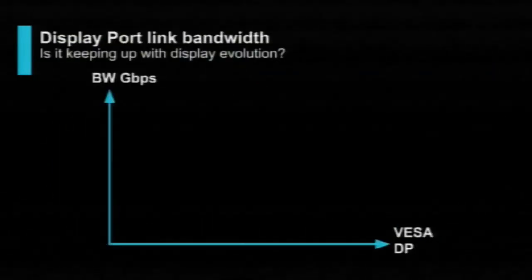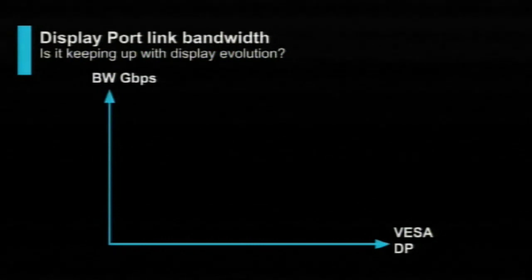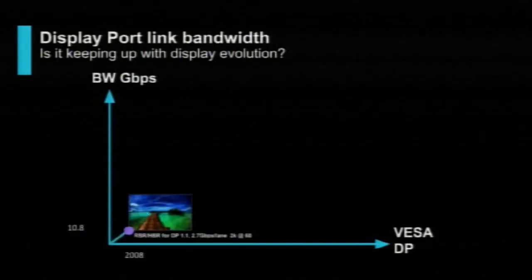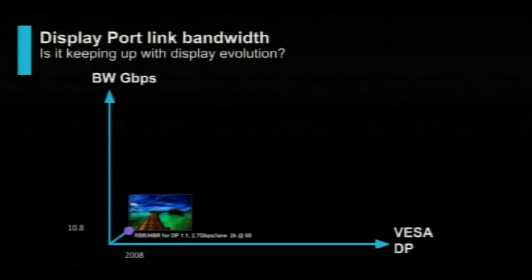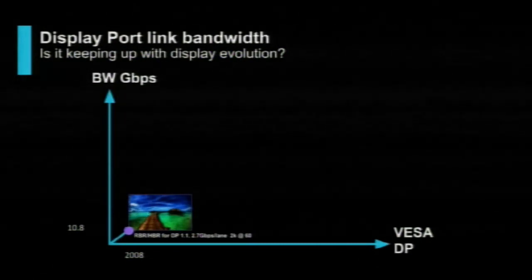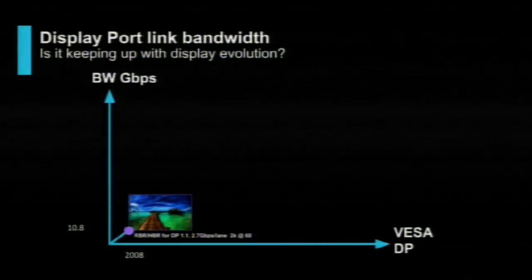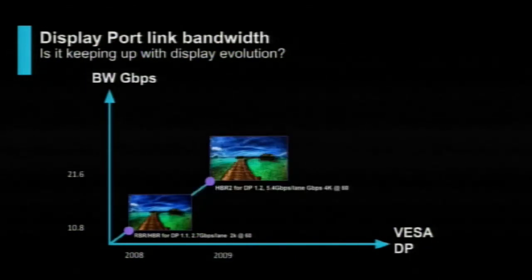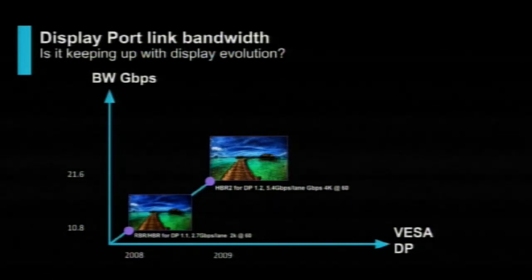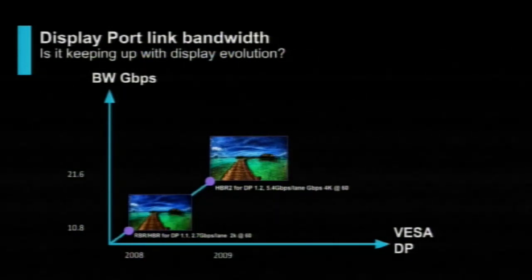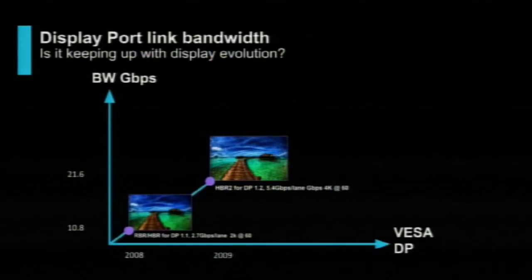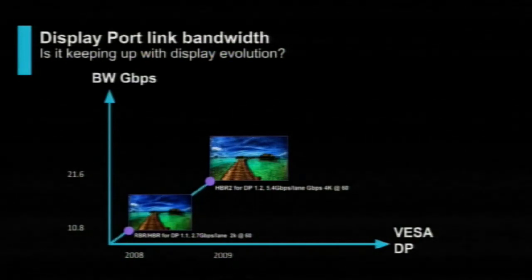Let's see if DisplayPort bandwidth has been able to keep up with these advancements in resolution. The first DisplayPort spec, DP1.1, only supported Reduced Bitrate or RBR, which could do 2.7 gigabits per second per lane — enough for 2K at 60Hz. The next one, DP1.2, added HBR2 at 5.4 gigabits per second per lane, so using four lanes it could do 21.6 gigabits per second total, supporting 4K at 60Hz.